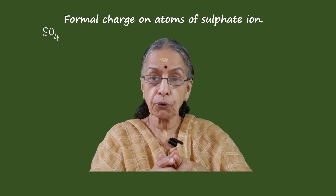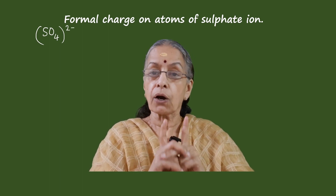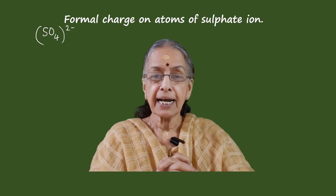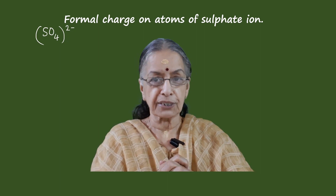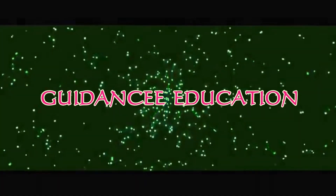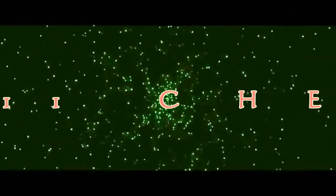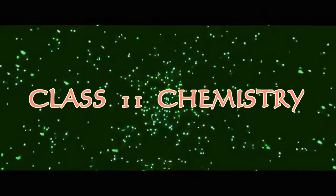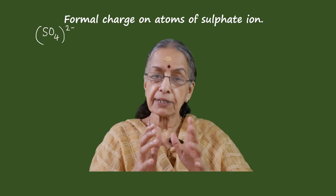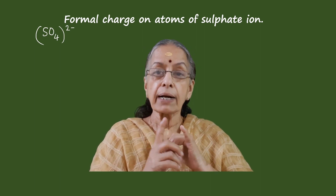Sulfate ion is SO₄²⁻, that means there are two negative charges on that group of atoms. I am Ananda Veli, and I welcome you all to this new video from Guidance Education channel. Now let us see the details. First we have to draw the electron dot diagram. Sulfate ion contains one sulfur atom and four oxygen atoms.